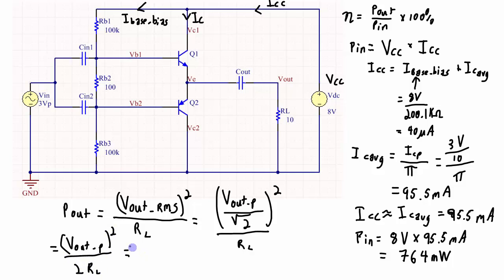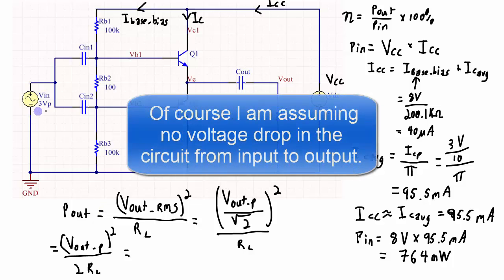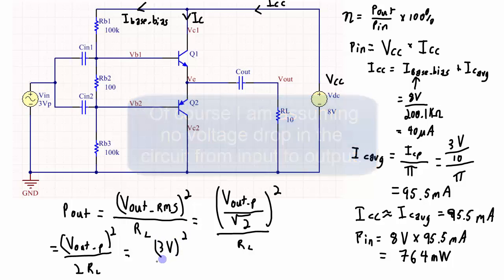Plugging numbers into that, since the input is 3 volt peak, the output is going to be approximately 3 volt peak. So that's going to be 3 volts squared over 2 times 10 ohms. And that works out to 450 milliwatts.